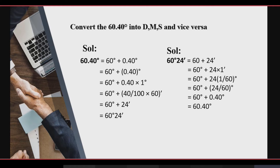We can convert it back to decimal form. For that, we have 60 degrees plus 24 minutes. We multiply 24 by 1/60, which gives 0.40 degrees. So 60 plus 0.40 equals 60.40, which we can see in decimal form.